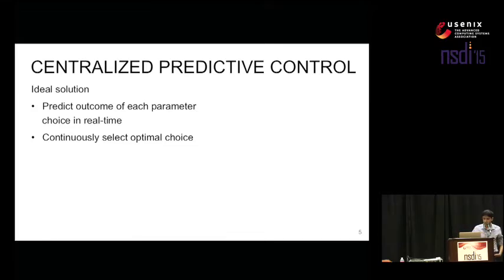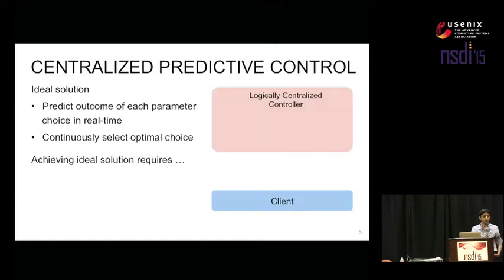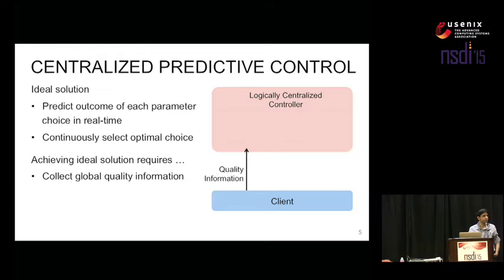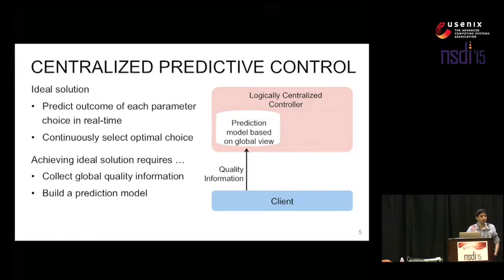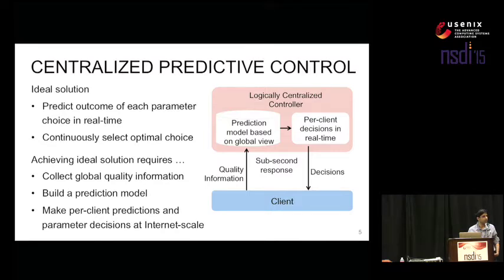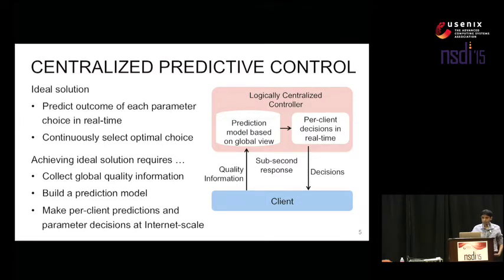To build a system like this, we would have to collect quality information from every single client into a central location for a global view, build a prediction model based on that data to predict the outcome for each individual client, make those predictions, drive decisions based on that, and feed those decisions back to every client — all in real time. There are numerous challenges to building such a system: the design, architecture, scaling for true internet scale control, and the prediction model itself. In this talk, I'm going to focus primarily on the architecture of building this centralized control system.